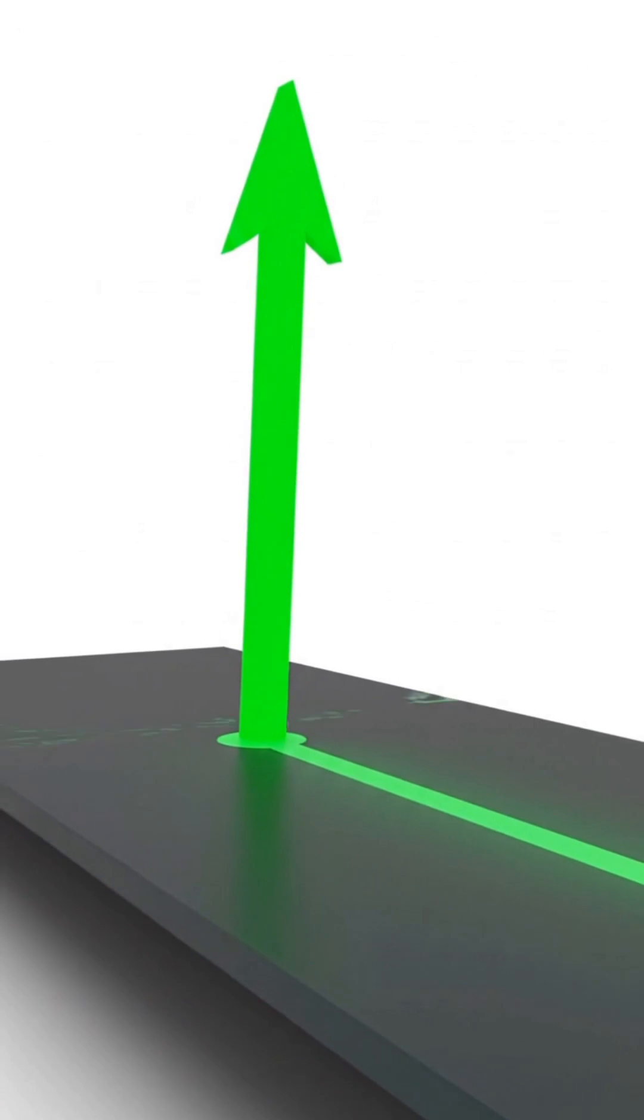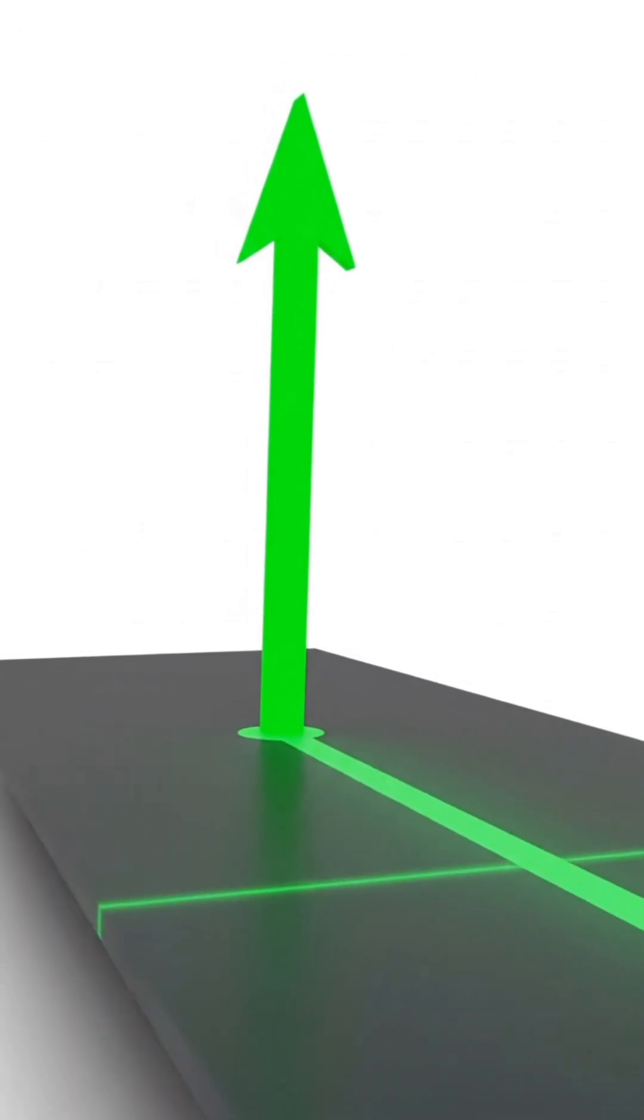As the angle changes, the shadow shortens or lengthens, just like the sun's position affects shadows.